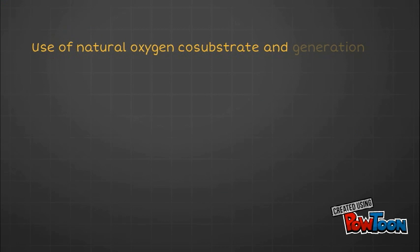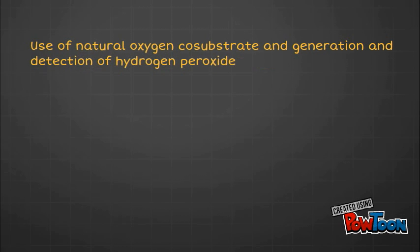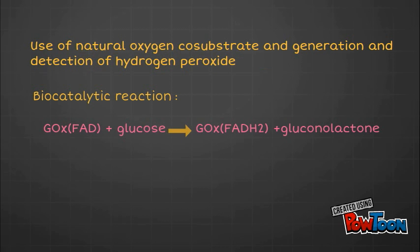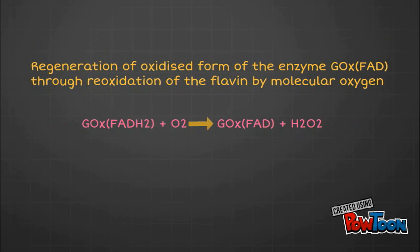First-generation glucose biosensors rely on the use of non-natural oxygen as a co-substrate and the generation and detection of hydrogen peroxide. In first-generation glucose biosensors, the oxidase form of the flavin group in glucose oxidase is reduced by a reaction with glucose. This gives rise to the formation of the reduced flavin group and gluconolactone. After that, the reduced flavin group reacts with oxygen to regenerate the oxidase form of glucose oxidase. At the same time, hydrogen peroxide is produced at the anode, and is then oxidized to oxygen, releasing electrons.